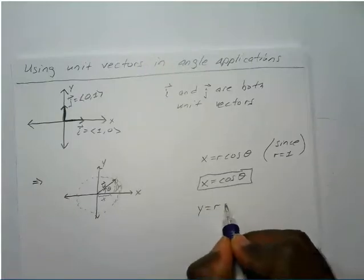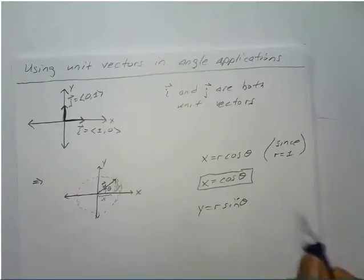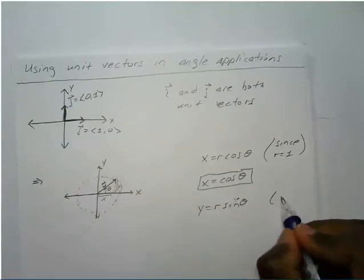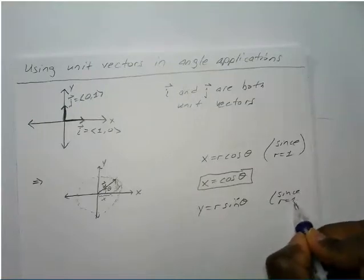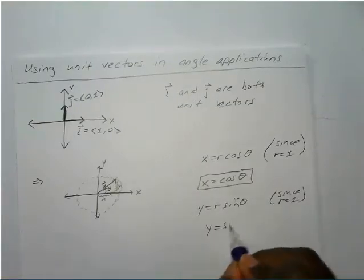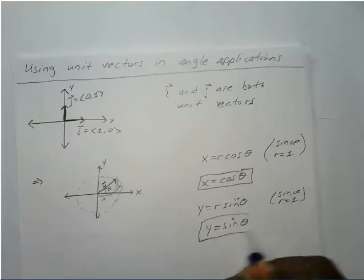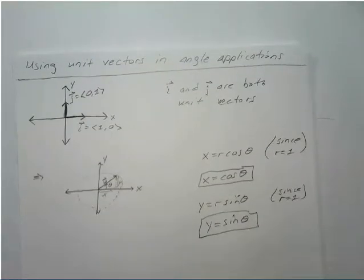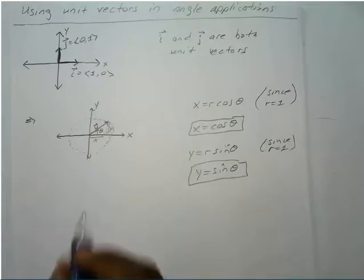Same thing with Y: Y equals R times sine of theta. Again, R is equal to one, so Y is equal to sine of theta. So how does that help us out?